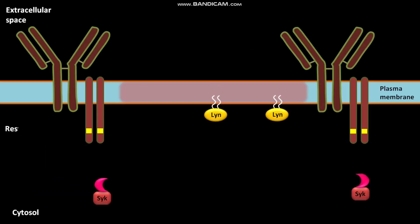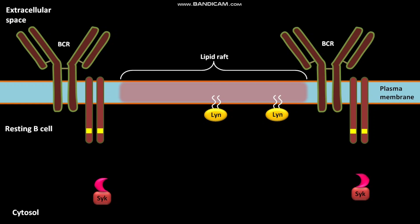The plasma membrane of a resting B cell has a B cell receptor, or BCR. In a resting B cell, the BCR is excluded from the lipid raft. The lipid raft is the region of the plasma membrane high in cholesterol and rich in glycosphingolipids. The lipid raft has many LYN molecules, and LYN is a tyrosine kinase.